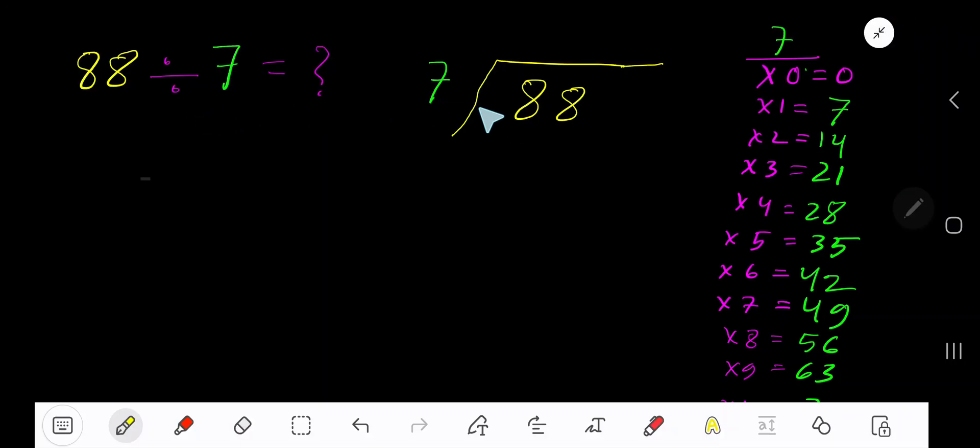88 divided by 7. Here, 7 is the divisor, so we need the multiplication table of 7. 7 times 0 is 0, 7 times 1 is 7, 7 times 2 is 14, 7 times 3 is 21, 7 times 4 is 28.